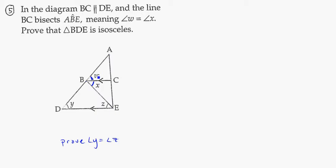And the first thing I notice is that these parallel lines allow us to see corresponding angles. So here, Y and W are corresponding angles, so I might say angle W is equal to angle Y,